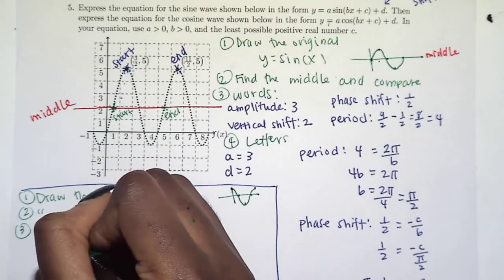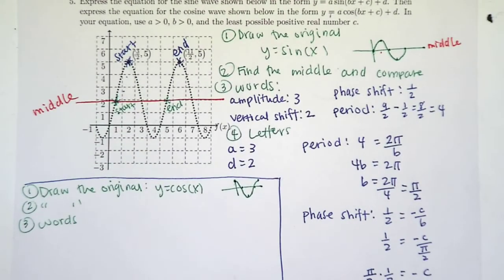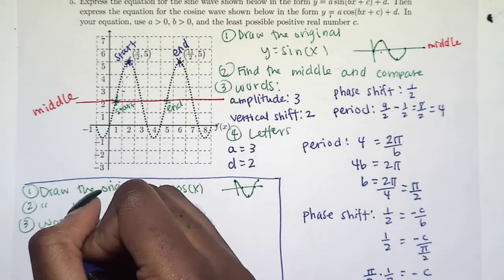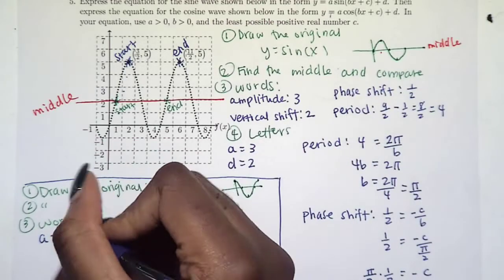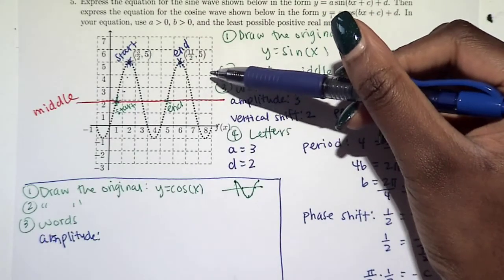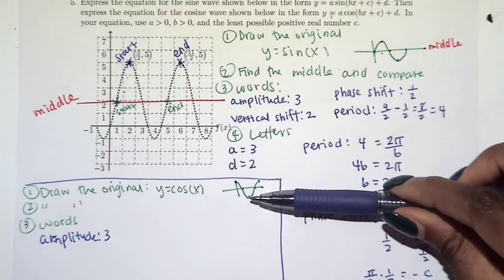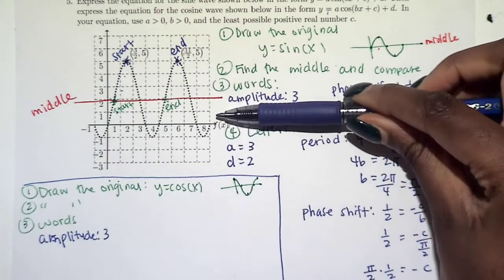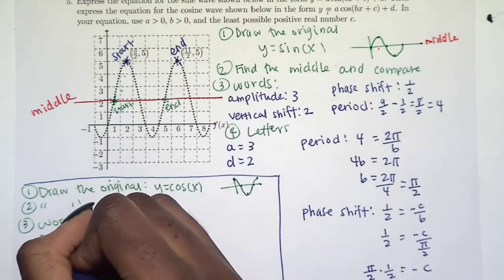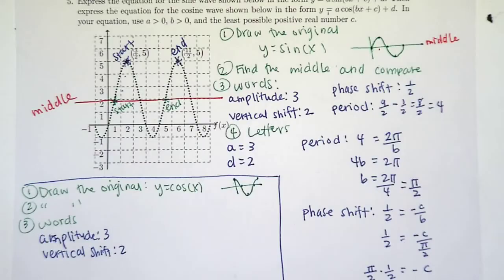Step three, we need to find the words which most of the words are going to be exactly the same because the middle is the same. So A, our amplitude, sorry, words first, amplitude is still three, just like it was before. Our vertical shift, well, the middle was the y-axis. Now it shifted up two units, exactly the same.